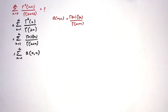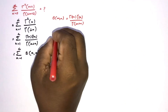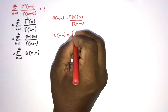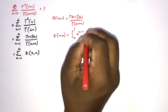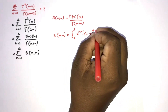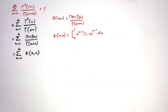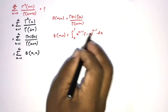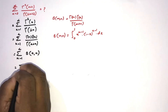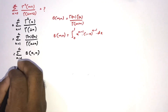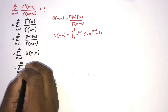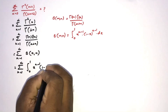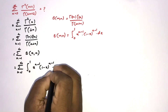We know the definition of the beta function: beta(m,n) equals the integral from 0 to 1 of x to the (m minus 1) times (1 minus x) to the (n minus 1) dx. So instead of beta(n,n) we can represent it as a definite integral.